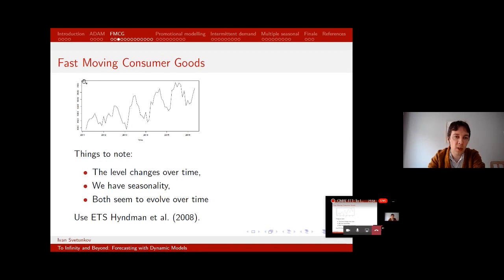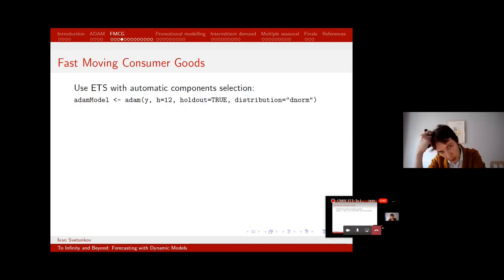What can we say about this data? Well, first it seems to either have a trend or a slowly changing level. We have seasonality, quite well pronounced seasonality. They seem to evolve over time. There is something happening in the very beginning of the data, but it shouldn't impact our final forecast. Hopefully it shouldn't. And what we can do here is use exponential smoothing as proposed by Hyndman et al in 2008 textbook. That's what we do in ADAM. And in fact, ETS is the base of the function so you can build upon it. You can switch it off, but by default it will be there. So this is the command I would use in R.